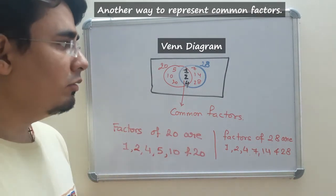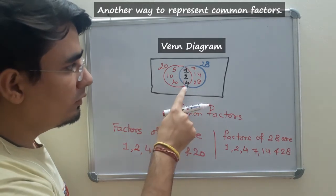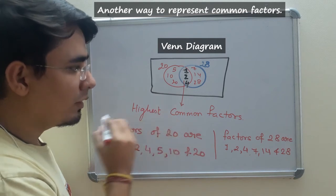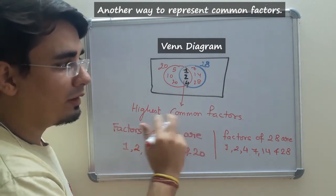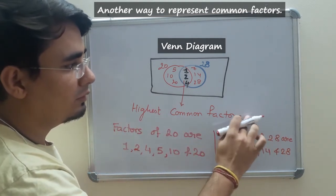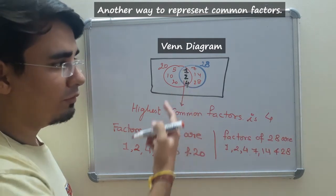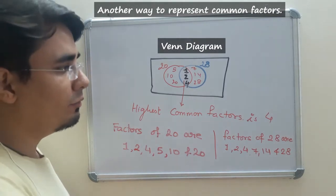Let me just help you out. If you find the highest number, highest common factor is 4. As you can see, 1, 2, and 4. Out of these, what is the highest common factor? It is 4.